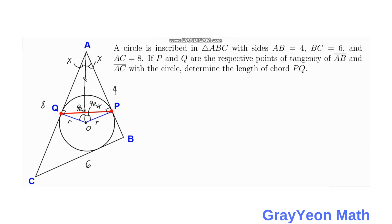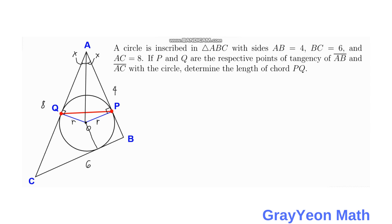We have two right triangles which are congruent to each other. With the same angle 90 minus x, it is opposite side AB, and this angle is opposite AQ. Since they are opposite two equal angles, these two lengths are congruent. If we draw a perpendicular line from the center of the circle to BC, the same is true as with APQ.